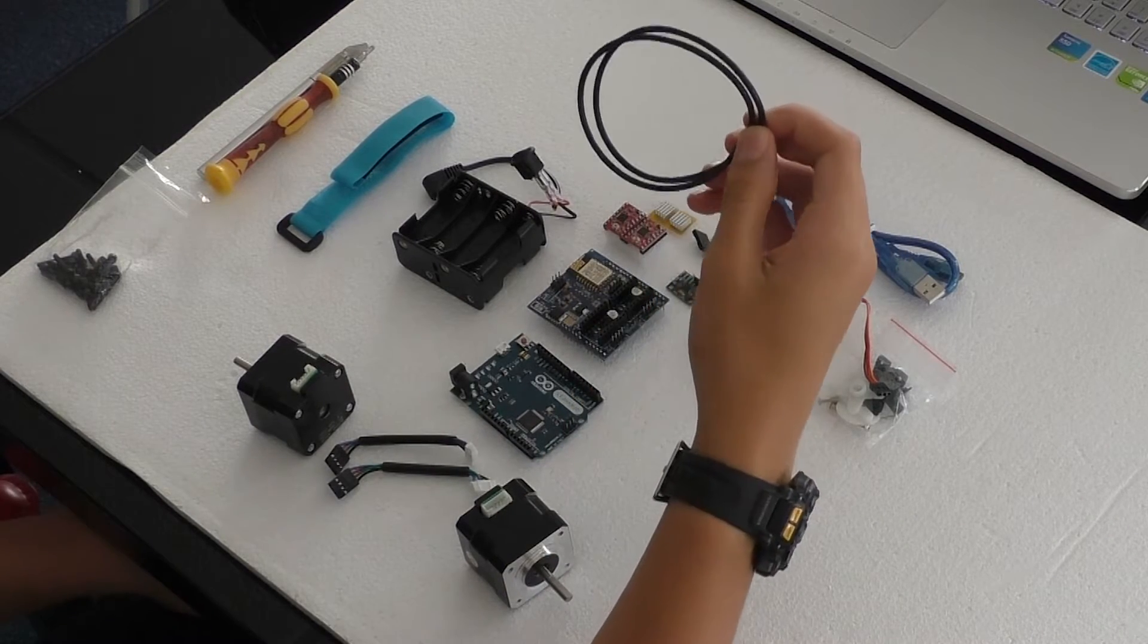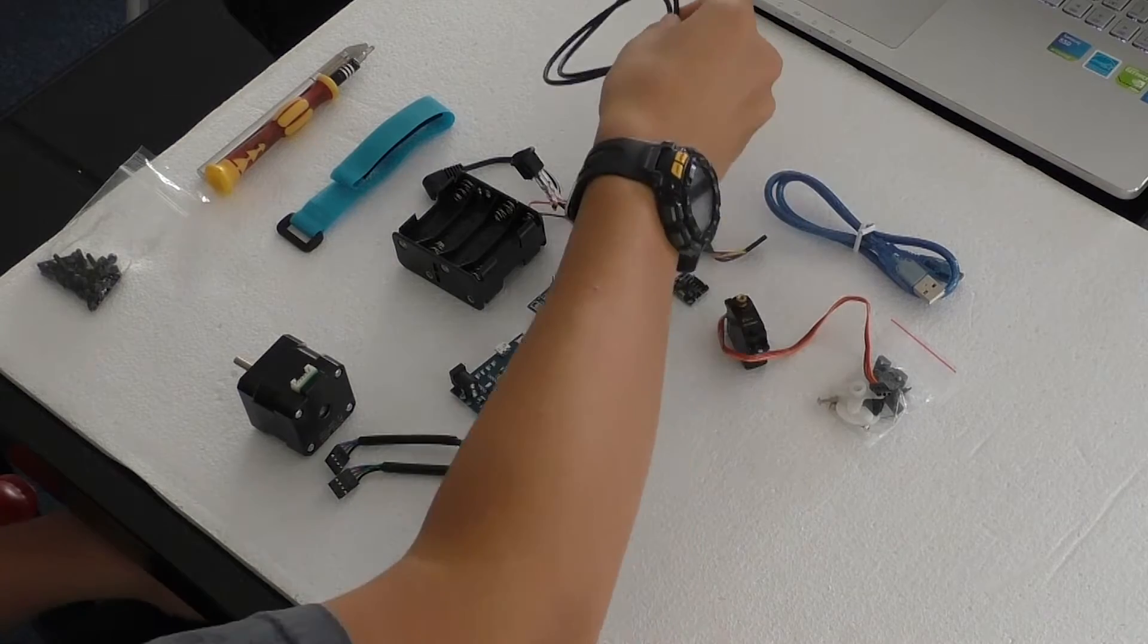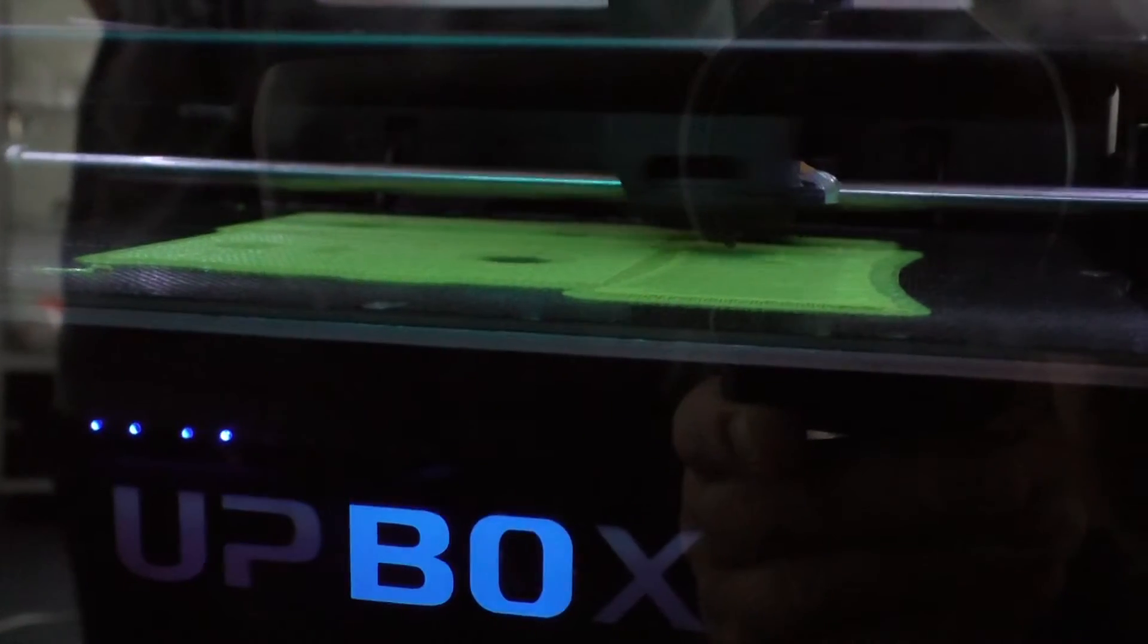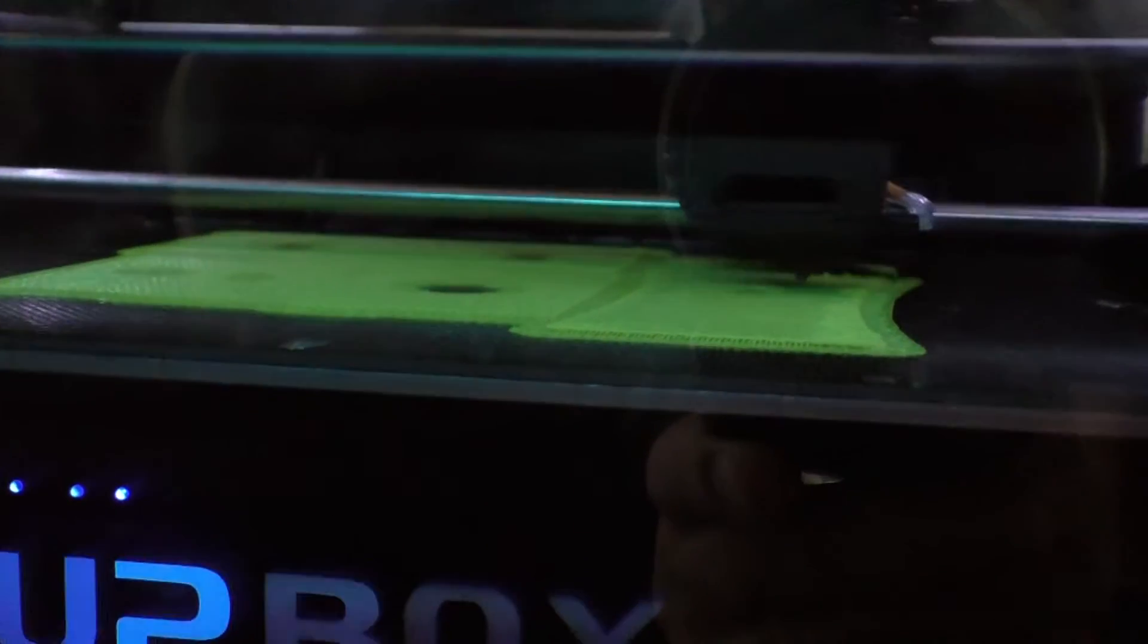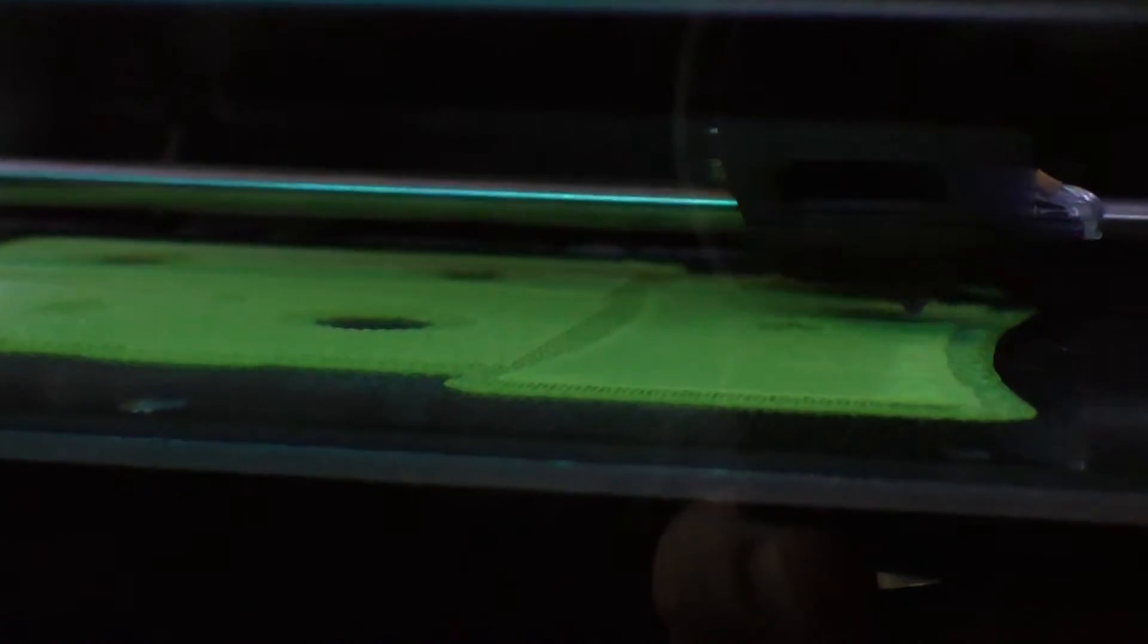These are the rubber grips for the 3D printed wheels. We've downloaded the STL files needed for the 3D printed parts. We've opened them up on our 3D printing software and have started to print them out.